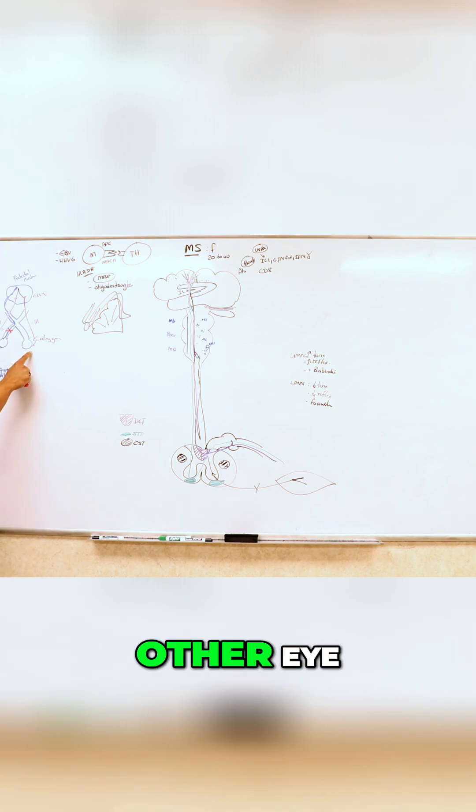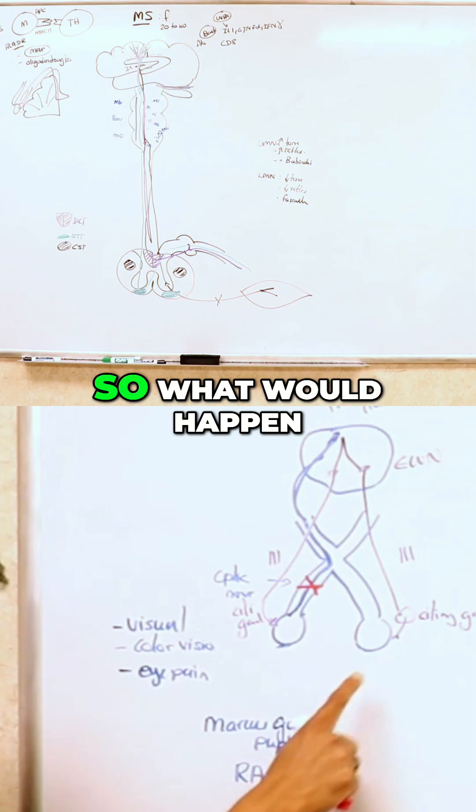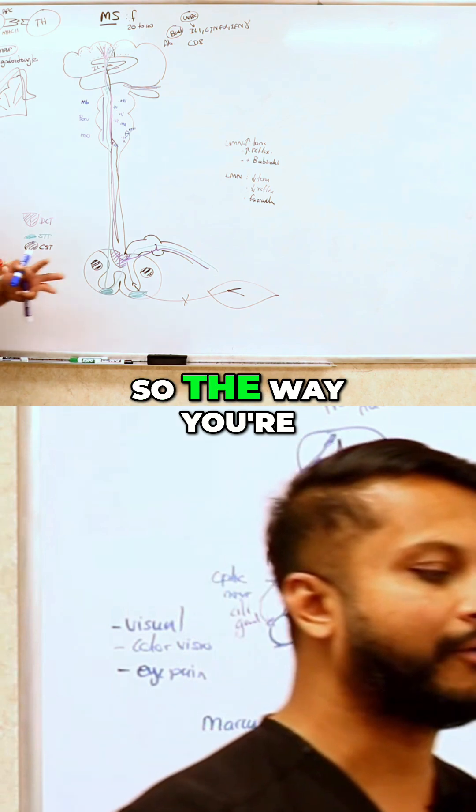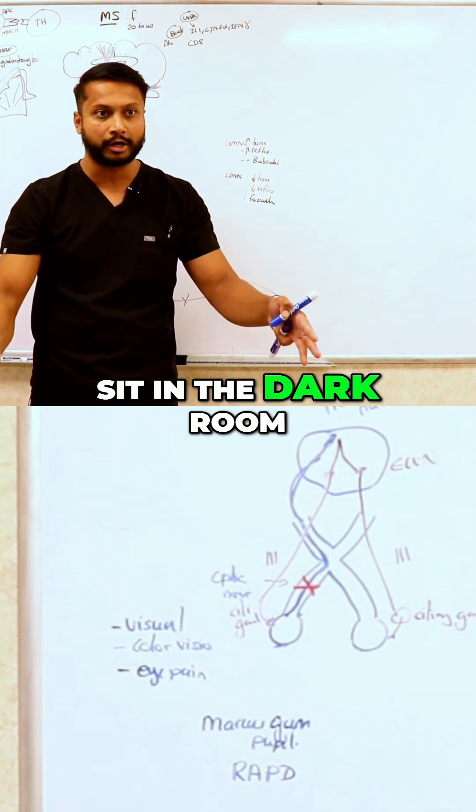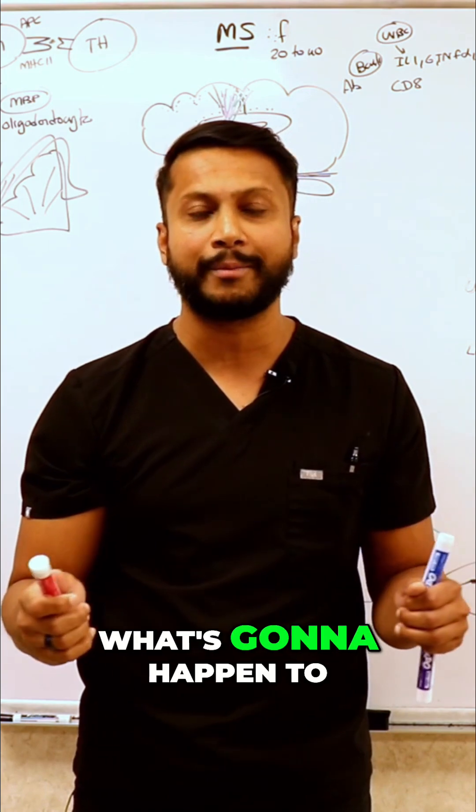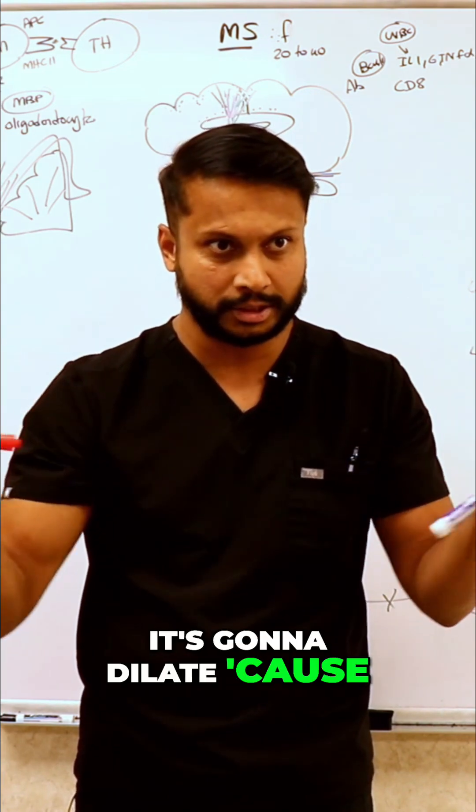The way you elicit a Marcus Gunn pupil: you make a patient sit in a dark room. The moment you go into a dark room, what's going to happen to your pupil? It's going to dilate because it's dark.